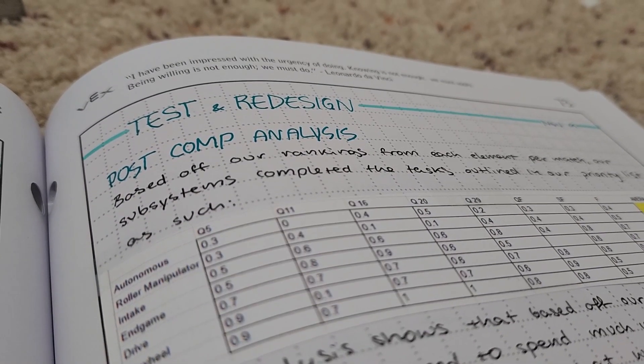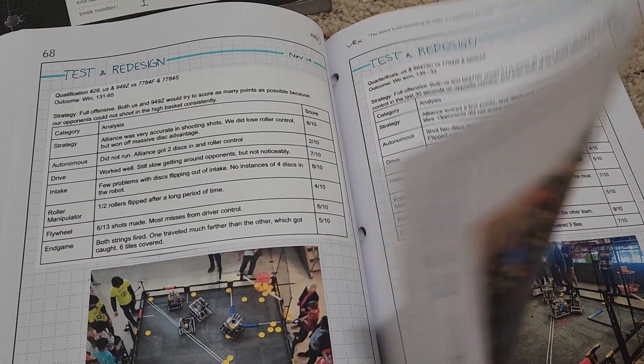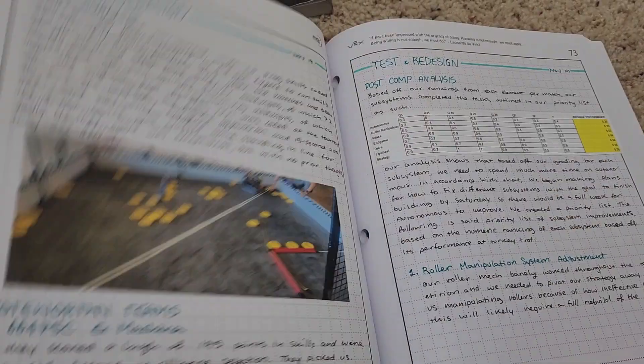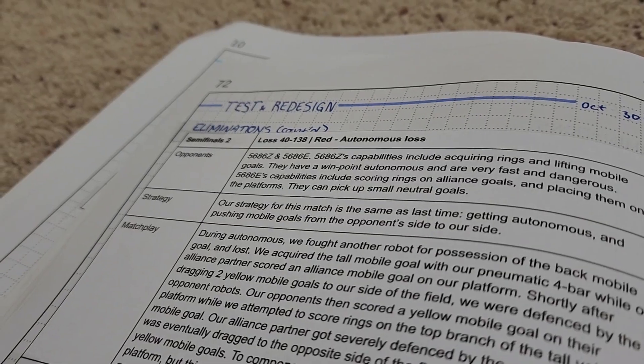Out of everything from the notebook, the competition formatting is the thing that has changed the most, and is the thing that I would change if I could go back, since there are so many more things that I could have done with the information we collected at competitions. But I guess I'll just improve that for next year.